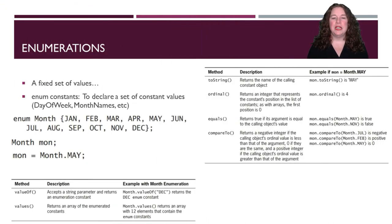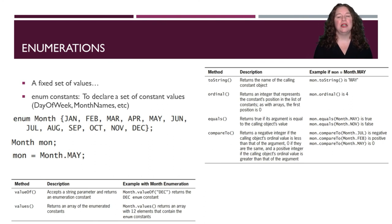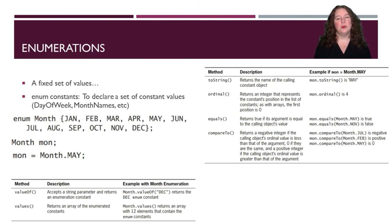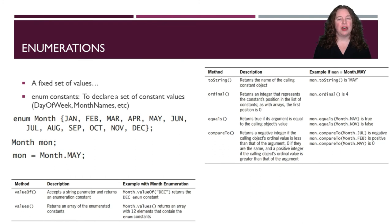Sometimes when working with data you want to ensure things are always referenced from a fixed list of possible values — such as days of the week or months of the year. We use enumerations so that the user only has a subset of possible values. Enumerations are great: rather than making an entire class for months, I can just make a quick enumeration called Month with only 12 values. Methods available with enumerations include toString, ordinal (which gives its position in the list), equals, and compareTo.